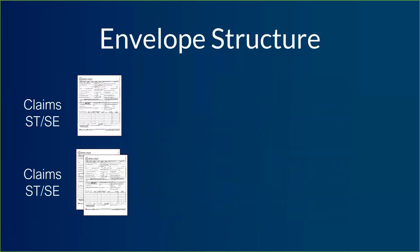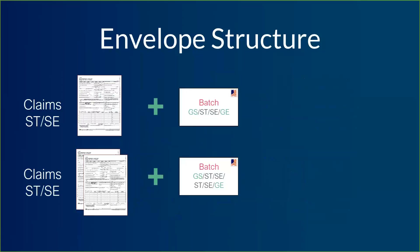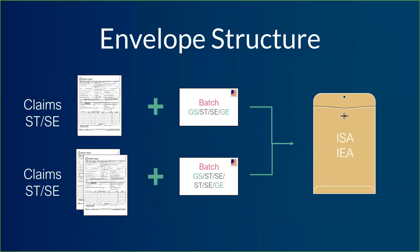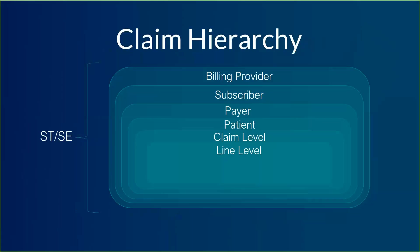For those who don't identify with the Russian dolls imagery: think of the ST to SE as a paper claim form. You can take one or multiple claim forms and put them in a batch envelope. And these business-level envelopes can themselves be put into a larger manila envelope, and that whole thing could be shipped off to another destination. So, what's inside the ST to SE? Let's start digging into that.